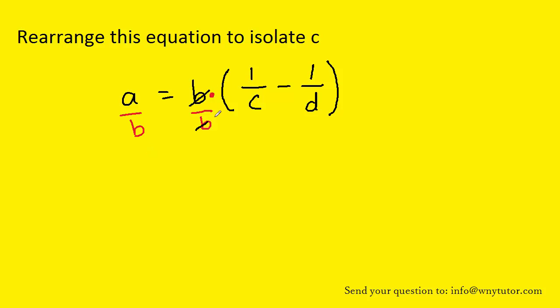Now of course B divided by B is just 1 so those essentially cancel and then we're left with A divided by B is equal to the quantity that was in the parentheses. Because that quantity in the parentheses is isolated we can drop the parentheses to yield 1 over C minus 1 over D.